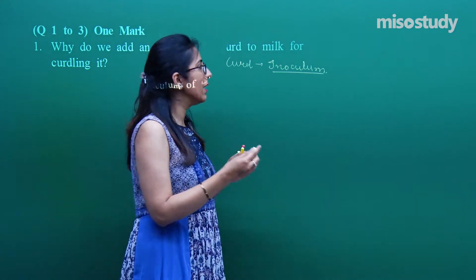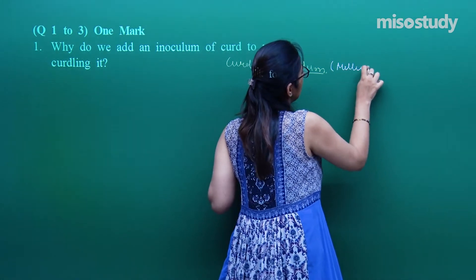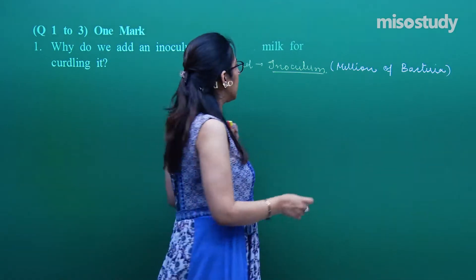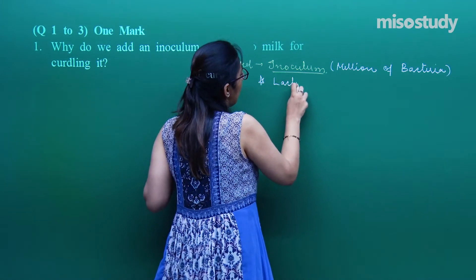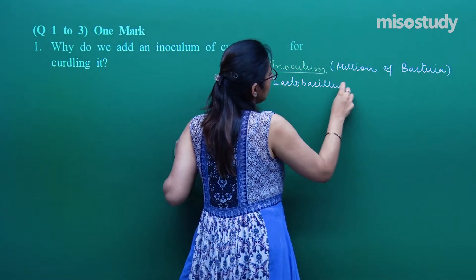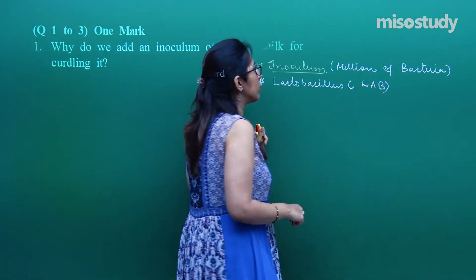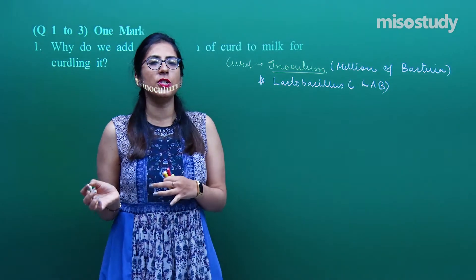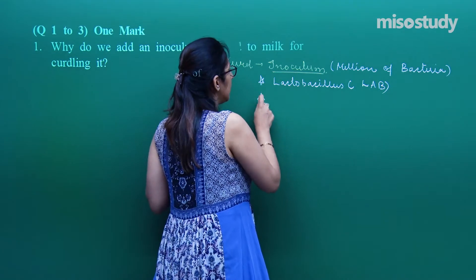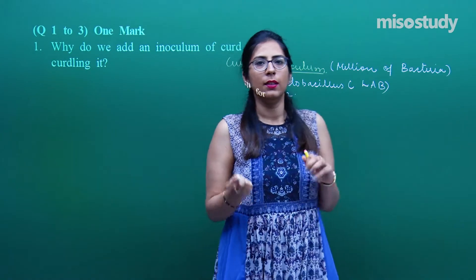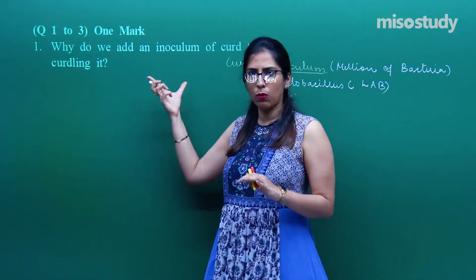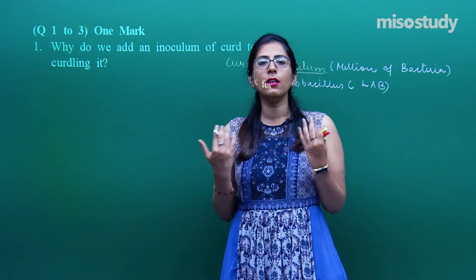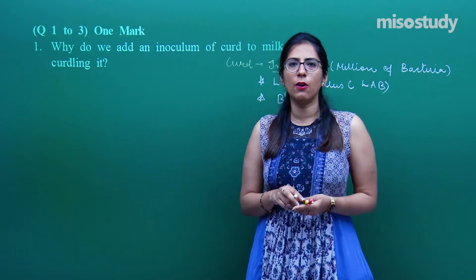Since we are producing curd, the important bacteria in this case is the lactic acid bacteria (LAB). It helps in coagulation of milk protein and also helps in the partial digestion of this protein. Additionally, curd has a higher concentration of Vitamin B12 compared to milk. That is the reason inoculum is required — it contains millions of bacteria important for coagulation and increasing nutrient content.